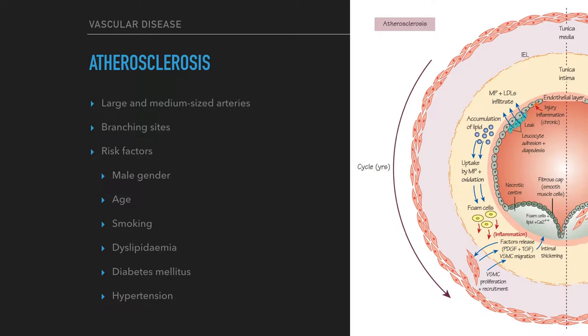Atherosclerosis principally affects large and medium-sized arteries — the aorta and its branches including coronaries, carotid, mesenteric, and lower limb — but has a preponderance for occurring at branching sites.